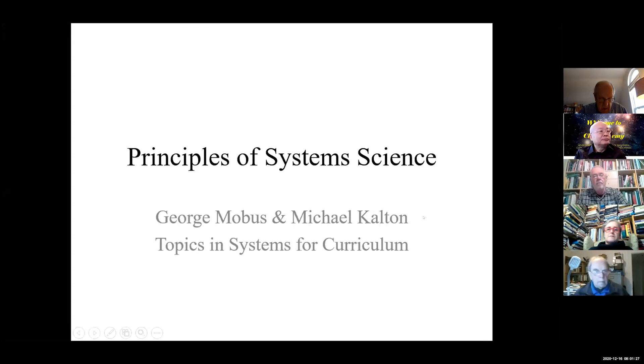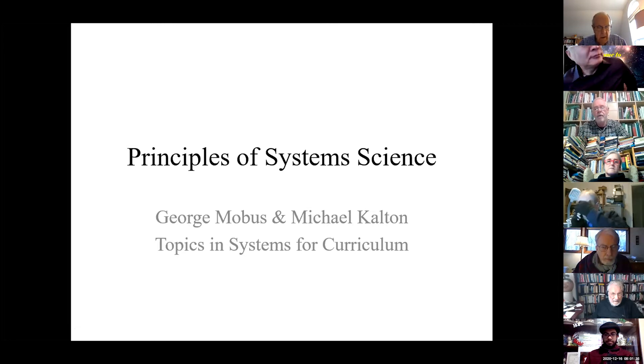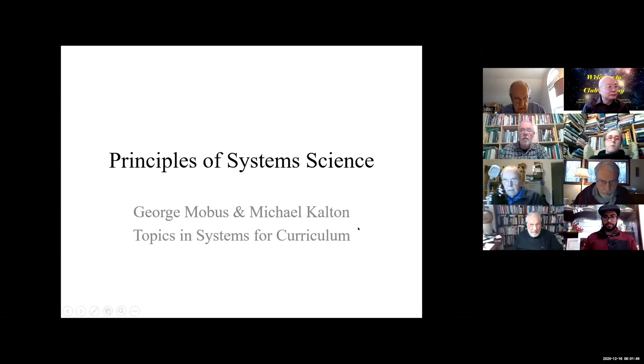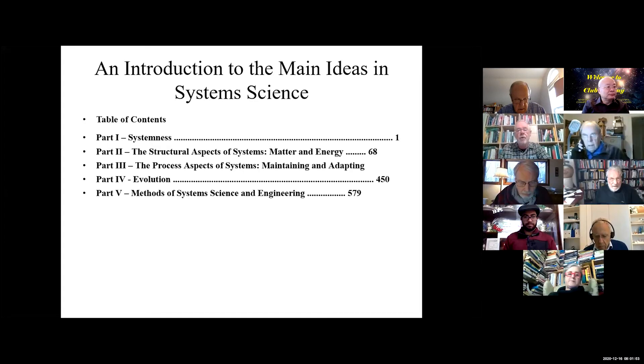The book Principles of System Science is published by Springer, and I co-authored it with Mike Calton, one of my colleagues at the university. We originally conceived of it as providing curriculum or a basis for curriculum for courses in system science.